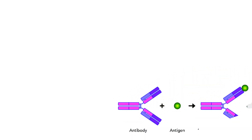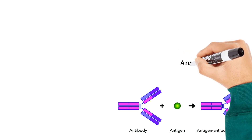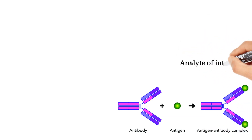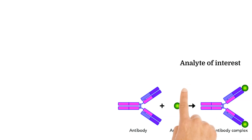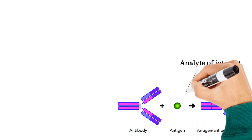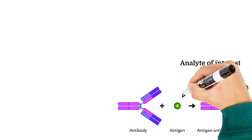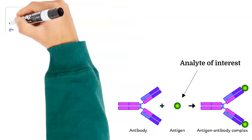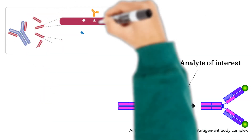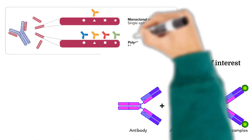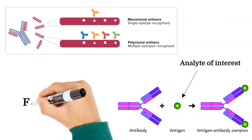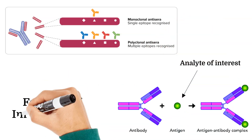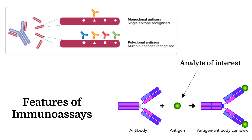Immunoassays are analytical techniques based on the selective binding between antibodies and antigens to measure the concentration of an analyte in a sample. There are two types of antibodies used: monoclonal antibodies, which have affinity to a specific antigen epitope, and polyclonal antibodies, which have affinity to multiple epitopes on an antigen.